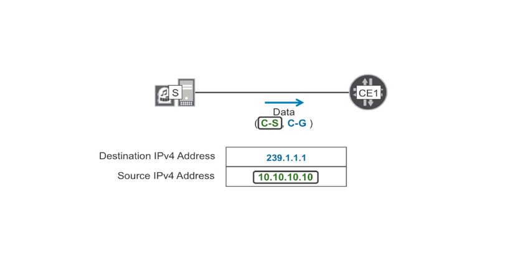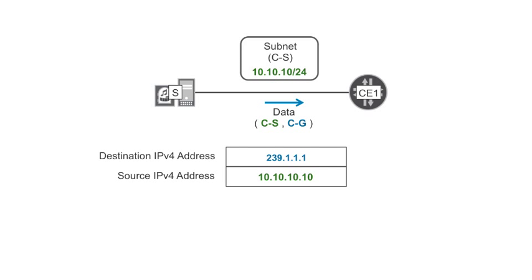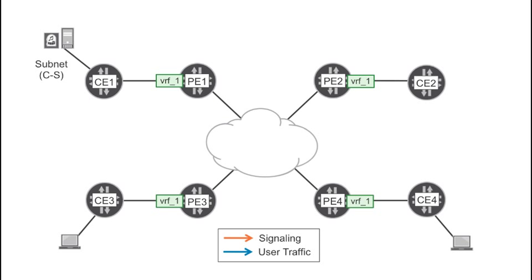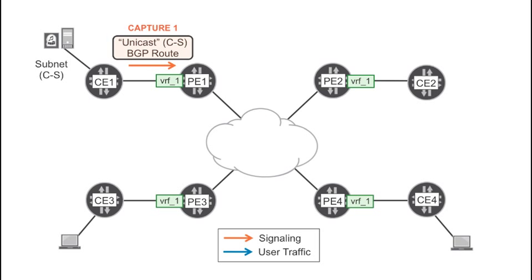As you probably know, unicast connectivity to the source is one of the most critical pieces of the multicast puzzle. In this task, there is a multicast source whose unicast IP address is represented as CS — C for customer, S for source. This IP address belongs to a subnet that is advertised from CE1 to PE1 using external BGP. You can see the BGP update in capture number 1, available for download in PCAP format at the Day1 website, like all the other captures.